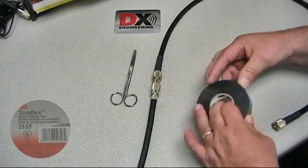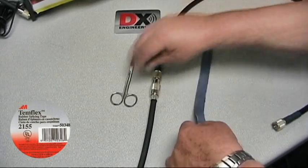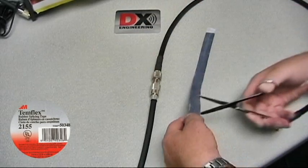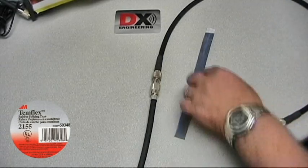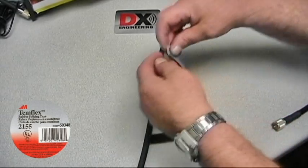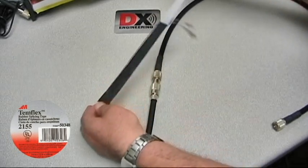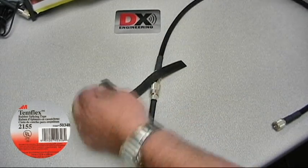In this example, we'll weatherproof two PL259s connected together. About 15 inches of Temflex Rubber Splicing Tape is needed. There is a strip of removable backing that allows the rubber tape to be rolled up without sticking to itself. Remove this wrapping.